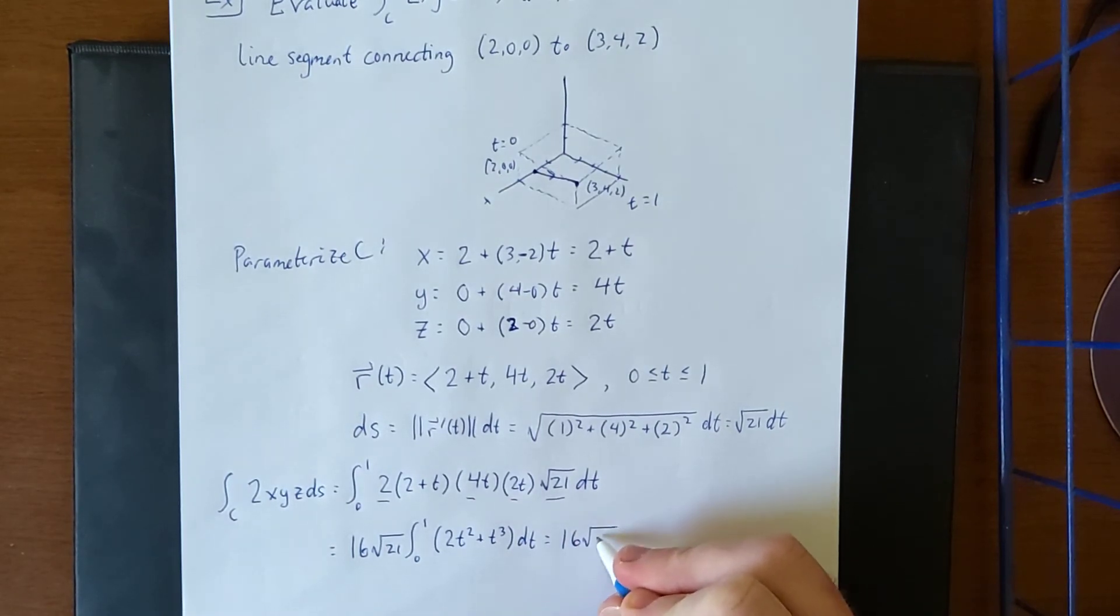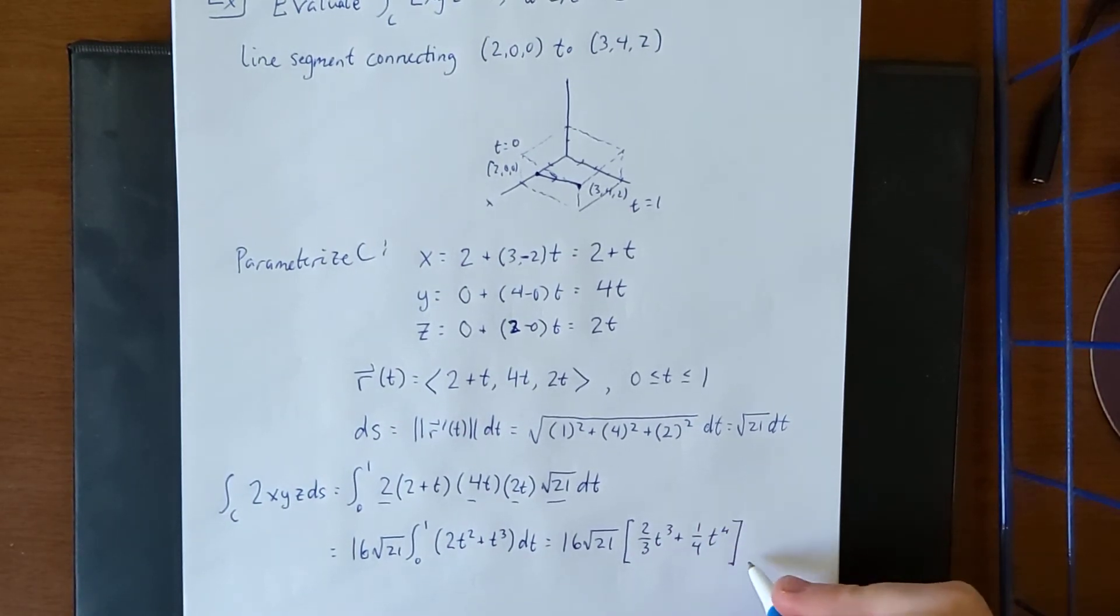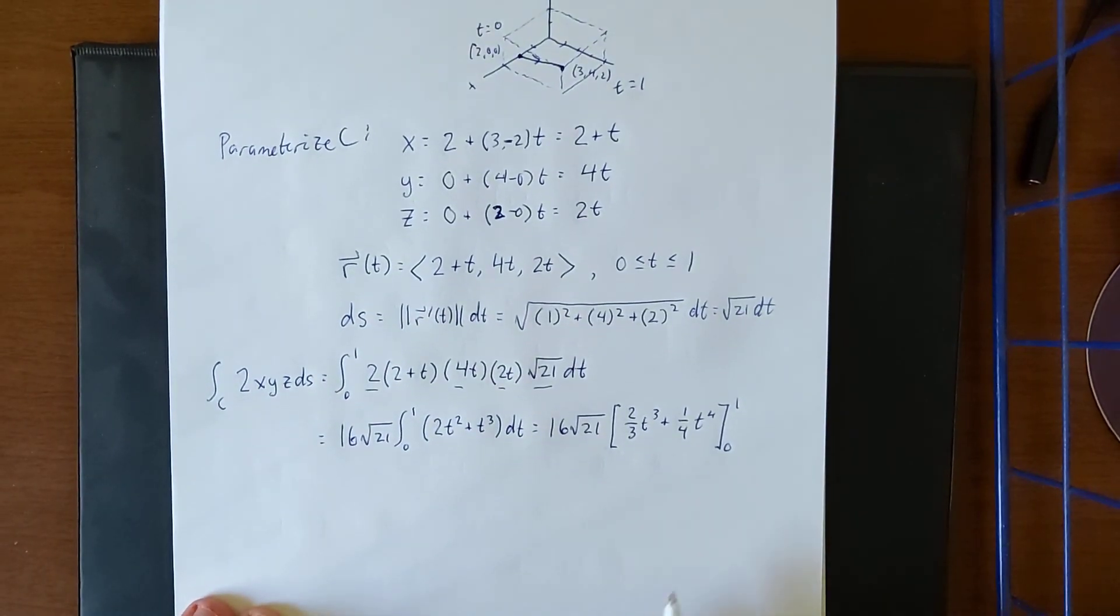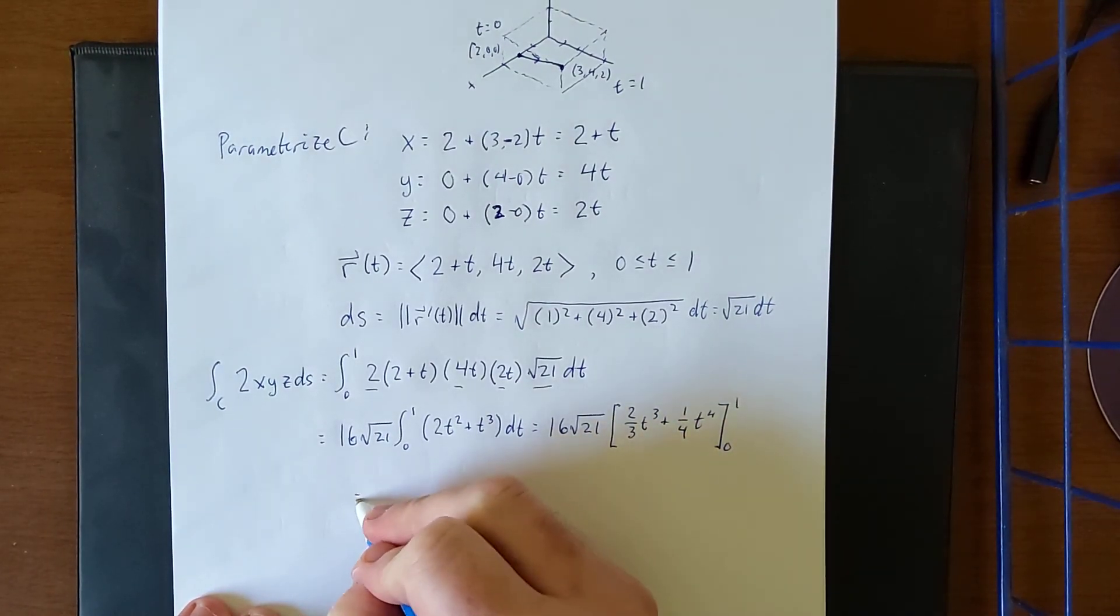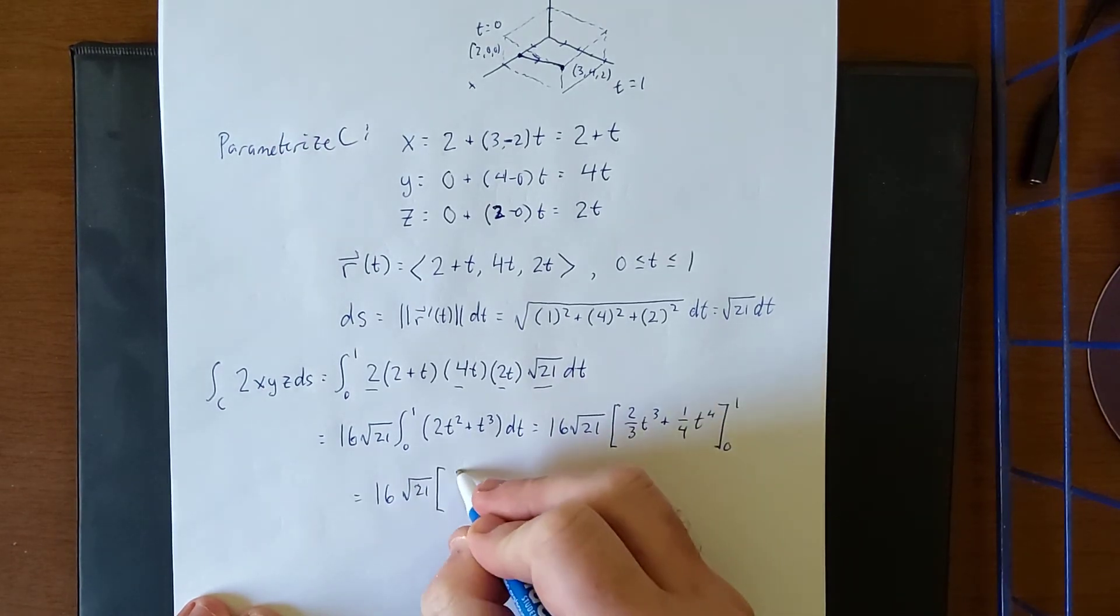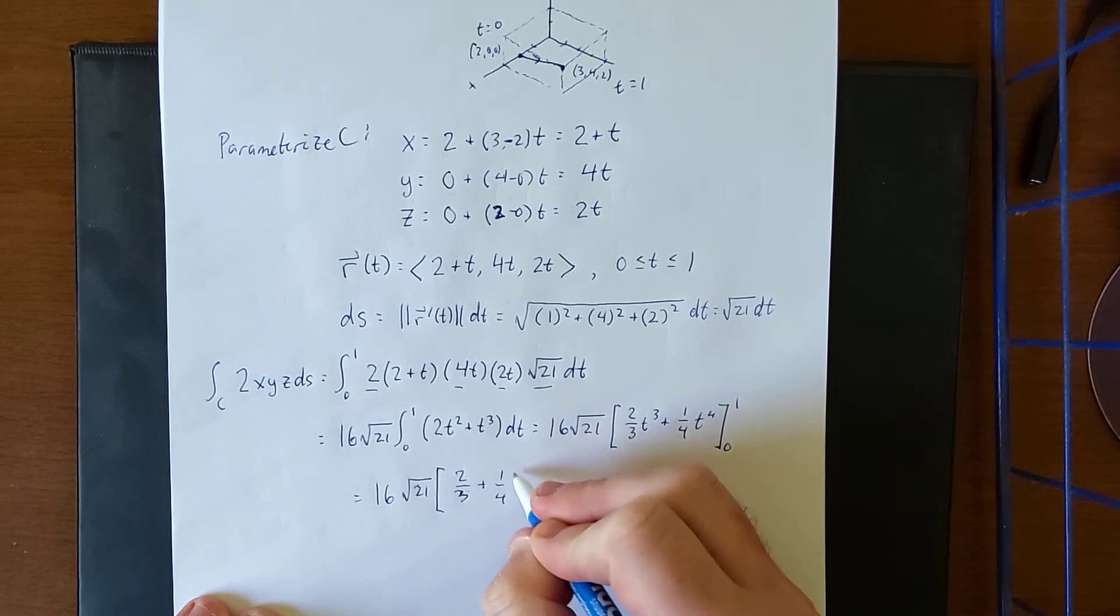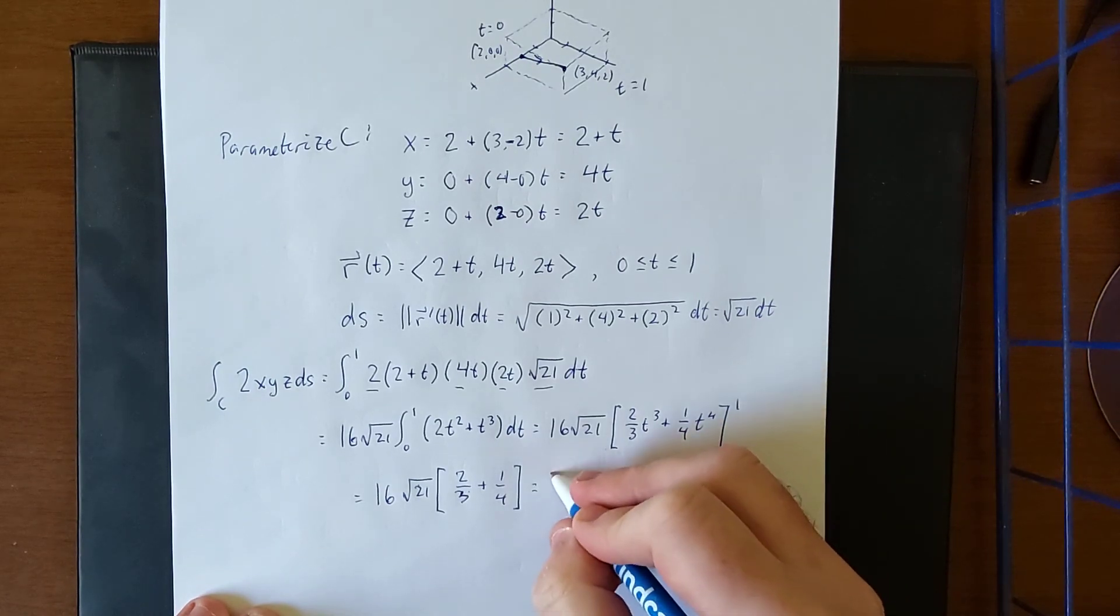That will allow us to integrate using the power rule to get (2/3)t³ + (1/4)t⁴, going from lower bound 0 to upper bound 1. Plugging in these bounds, the upper bound will give us simply the coefficients. So 16√21 times (2/3 + 1/4). Plugging in the lower bound of 0 will give us 0.